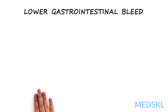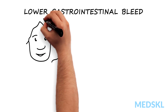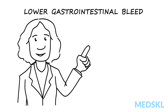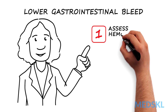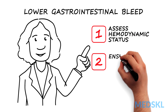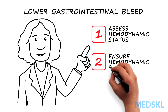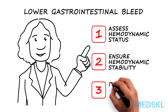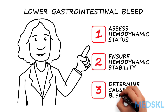When confronted with a patient with a lower GI bleed, there are three things that are critical. First, assess hemodynamic status. Second, ensure hemodynamic stability through volume resuscitation. And third, determine the cause of the bleeding.